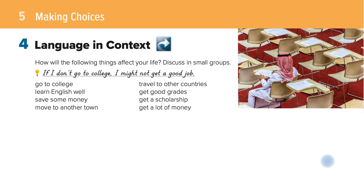The first thing we will be looking at is language in context. We have a list of things that may have an effect on your life. You're supposed to discuss them in small groups. How will the following things affect your life?